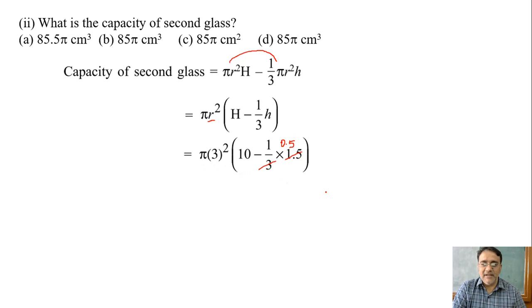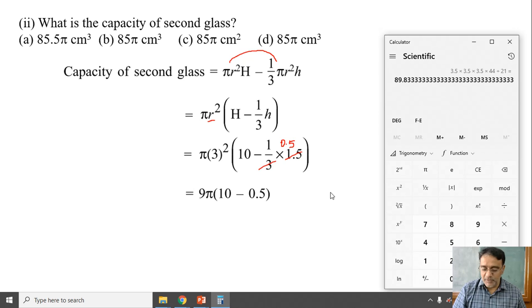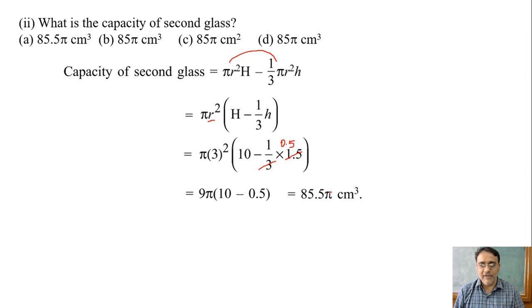So 9π into (10 minus 0.5). 10 minus 0.5 is 9.5, times 9 gives 85.5π cm³. Which is the correct answer? Option A. Right.